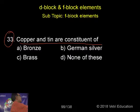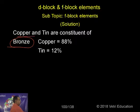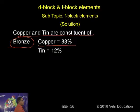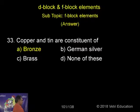What is the correct answer? The correct answer is Bronze. Copper and tin are constituents of bronze — copper is 88 percent, tin is 12 percent. That is bronze. So the correct answer is A.